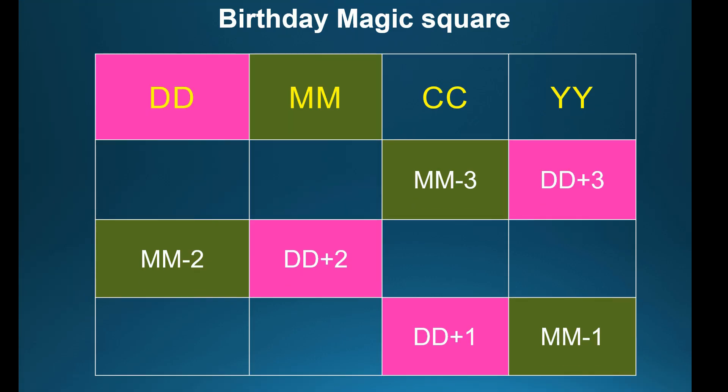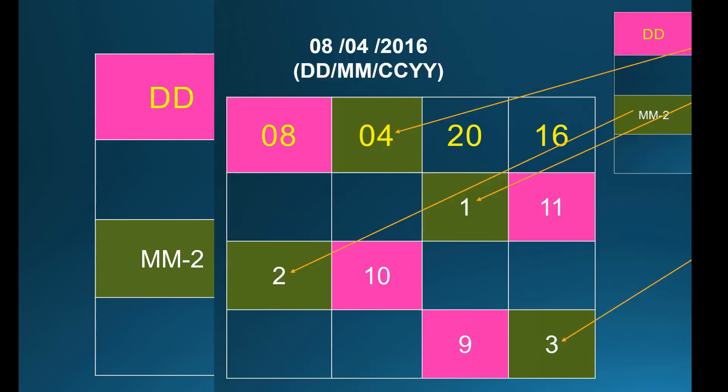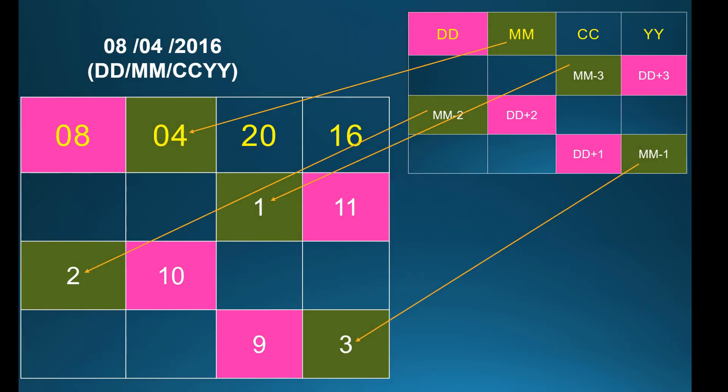Next, come to month. You should leave the month column. In the remaining columns you should fill month minus 1, month minus 2, month minus 3. Substitute the values and you will get the corresponding results.